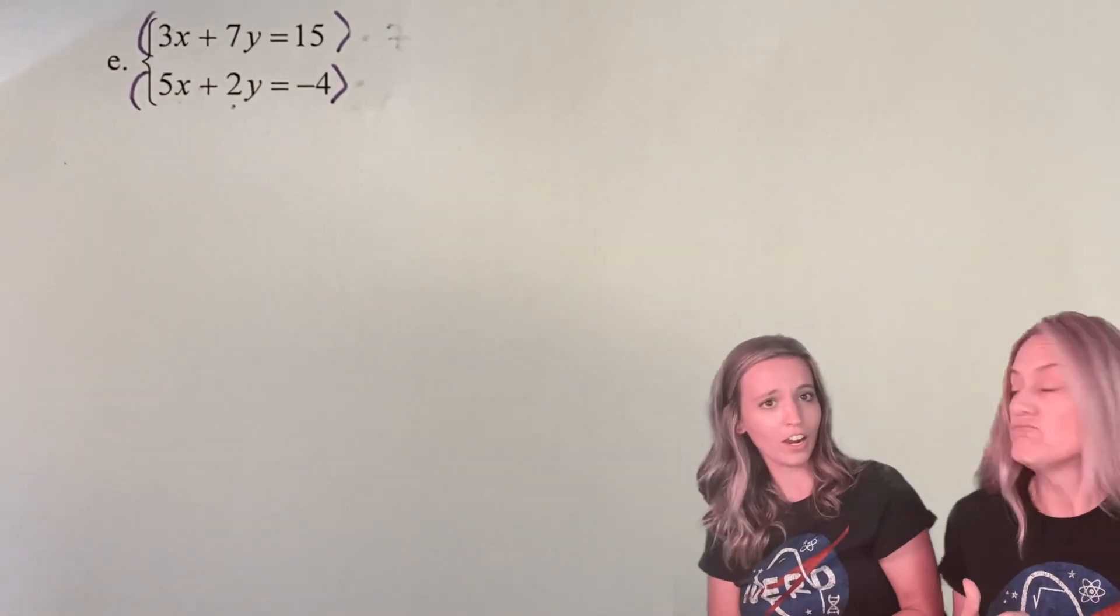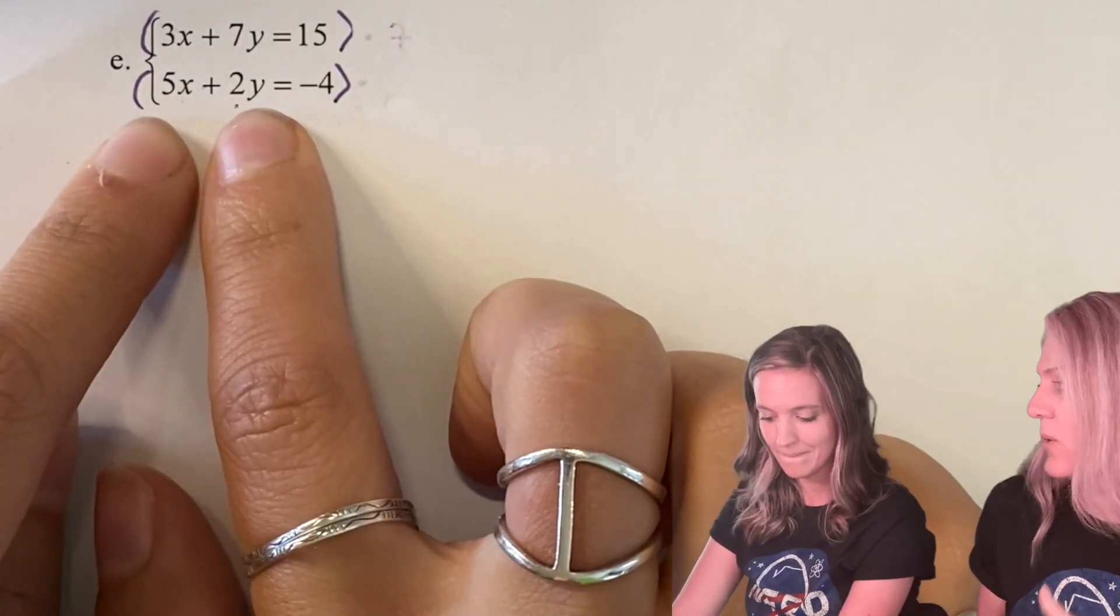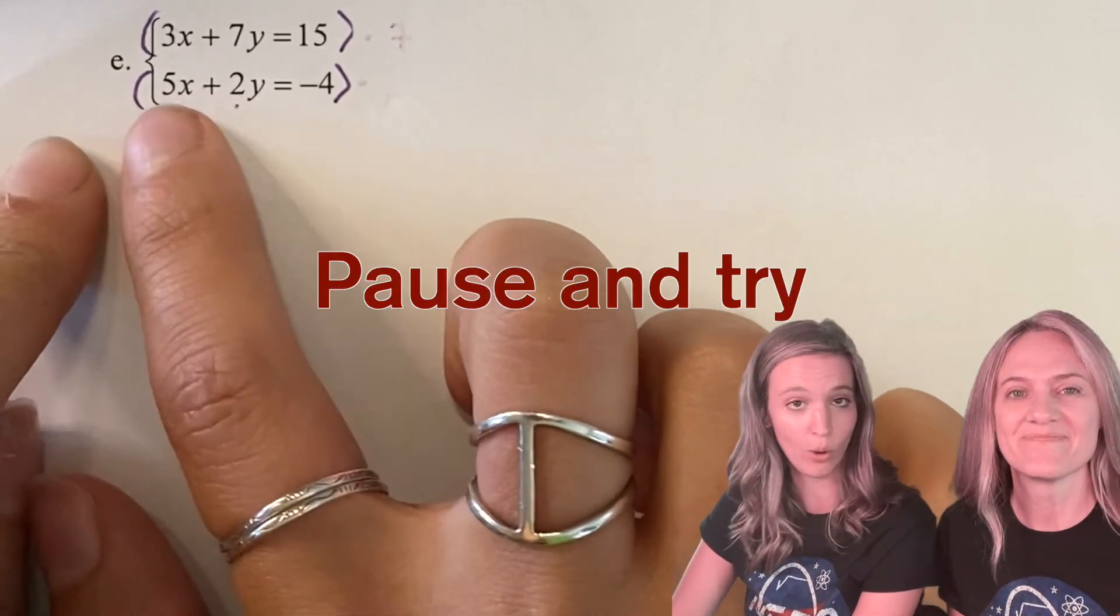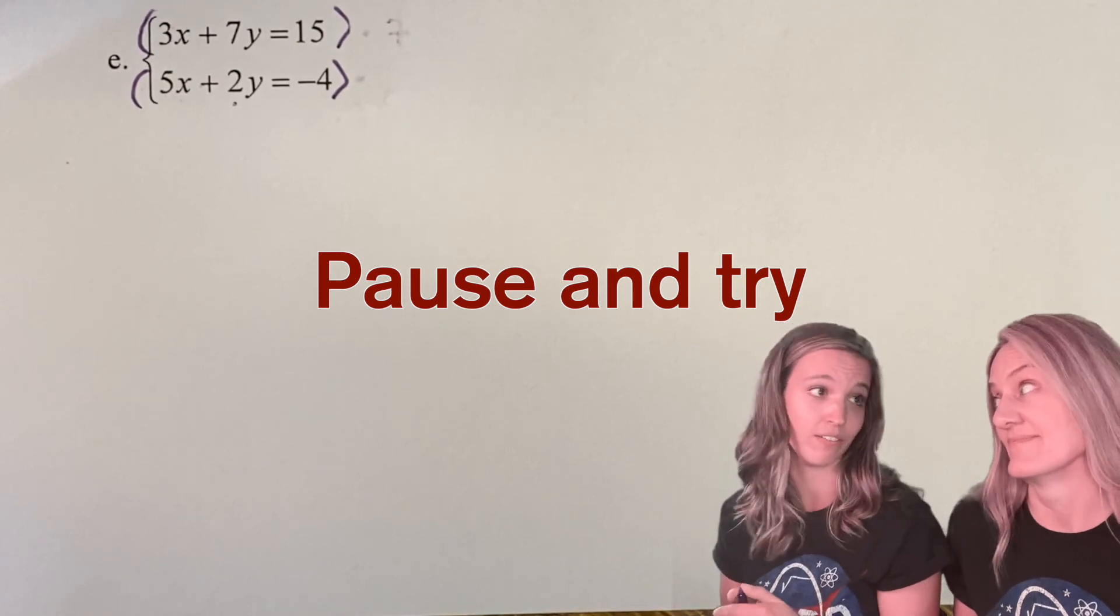Does it matter which variable I go after? No, we could do the 14, 7 and 2, and make one of those negative. So why don't you guys pick which one you're trying to go after multiply, but be sure to multiply one of those equations by a negative so they add out.